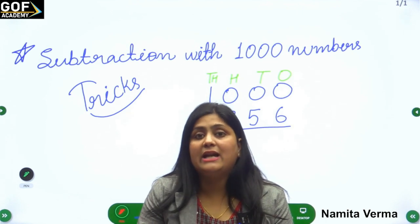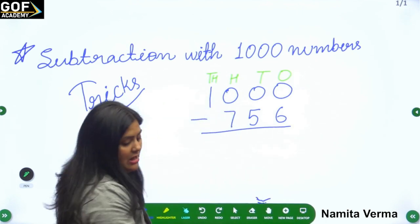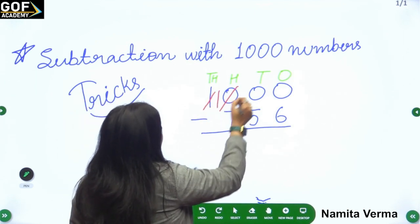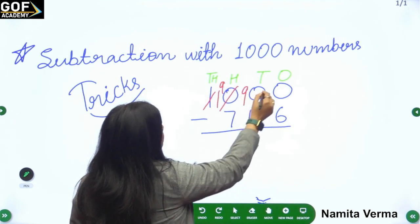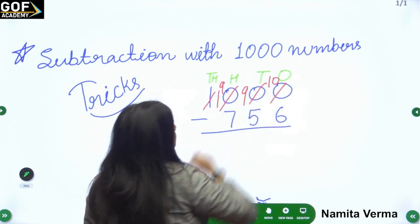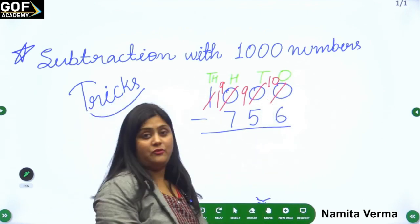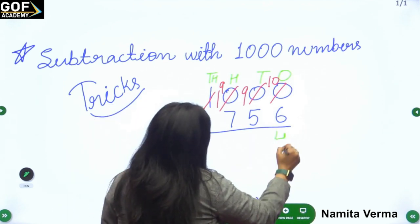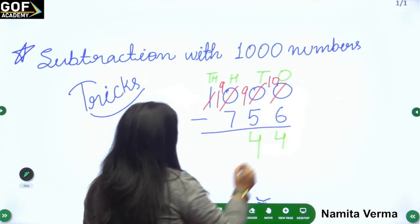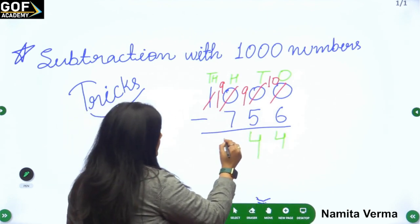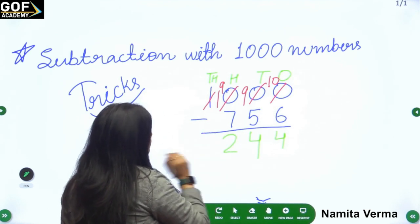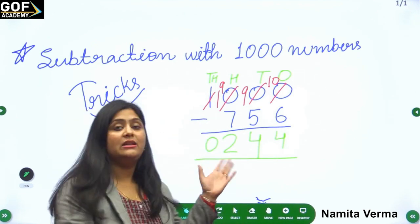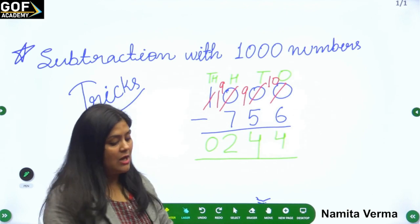Let's do it with regrouping. We cut the one, it becomes 9, and it becomes 10. Now subtract: 10 minus 6 is 4, 9 minus 5 is 4, and 9 minus 7 is 2. The one in the thousands place has nothing to subtract, so the answer is 244. See how much time we have taken with regrouping!